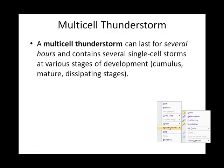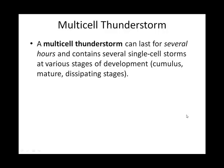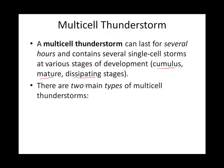Now that we know what single cells look like — both the normal ordinary thunderstorm cell and the supercell — we're going to talk about thunderstorm systems where we have multiple cells working, living their lives, going through those three same stages. Each cell will start out as a cumulus stage, just an updraft, then reach the mature stage with an updraft and a downdraft and precipitation, and finally the dissipating stage with only a downdraft. We have weather systems where more than one thunderstorm cell is at various stages of its life at the same time.